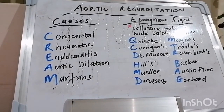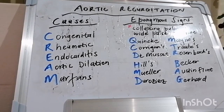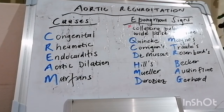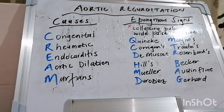In terms of investigations, ideally you want to do a chest X-ray, which may show cardiomegaly, an echocardiogram, an ECG showing left ventricular hypertrophy, an exercise stress test, and also a cardiac catheterization.